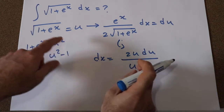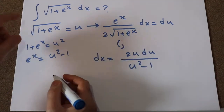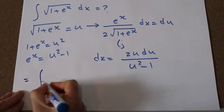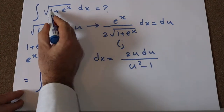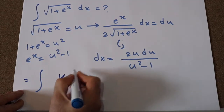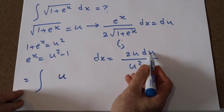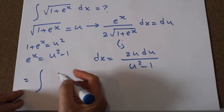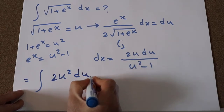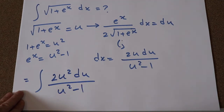So let's substitute this expression into this integral. Therefore, you can rewrite this integral as the integral of — instead of √(1 + eˣ) I write u, and instead of dx I write 2u du — giving 2u times u, which is 2u² du divided by u² minus 1.